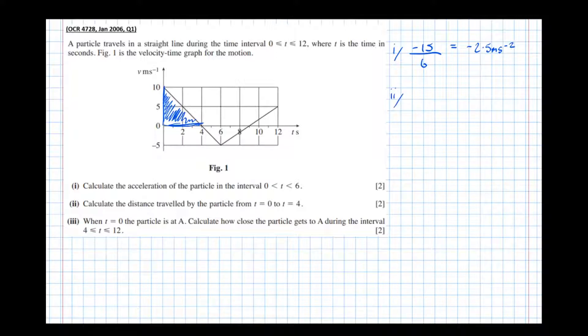Part 2. A half times the base which is 4 times the height which is 10 equals 20 meters. So it's traveled 20 meters in the first 4 seconds.